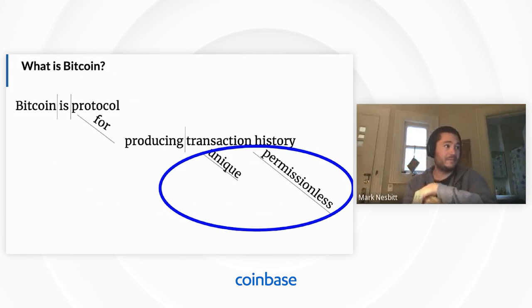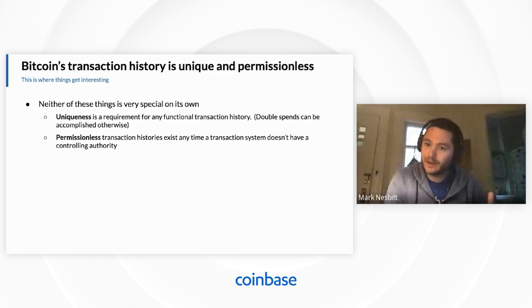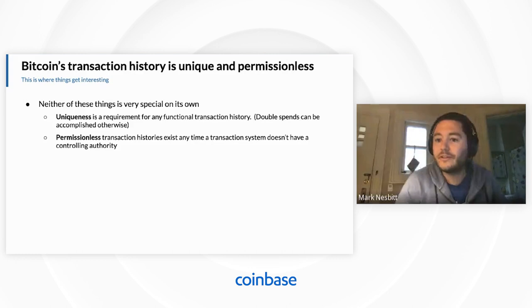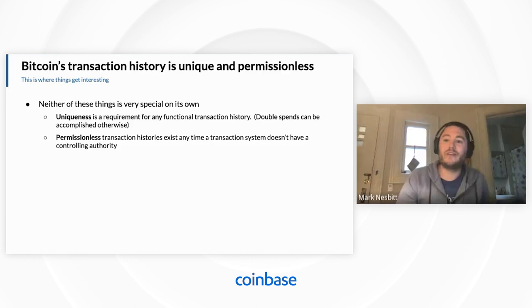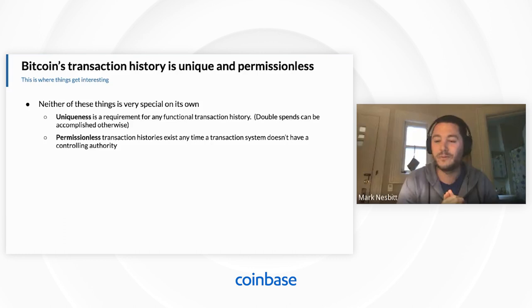This transaction history is unique and permissionless — this is where things get interesting. Uniqueness is a requirement for any functional transaction history; you can double-spend money otherwise. If Alice had two possible transaction histories — one sending $50 to Bob, one to Charlie — she could potentially get away with spending the same $50 twice if Bob and Charlie each see a different history. So if it's going to be functional, it needs to be unique. We have to be able to agree on one single transaction history.